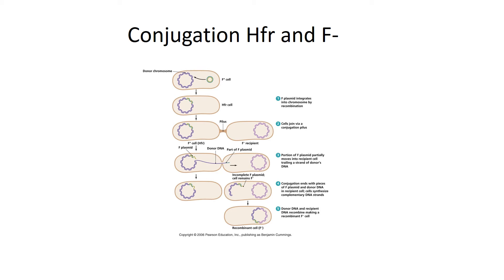The F-minus cell has just a single circular chromosome and no fertility plasmid. The HFR cell is F-plus because it does have the fertility plasmid DNA — it's just integrated into its chromosome.